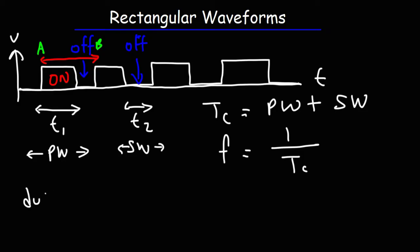And there's something called the duty cycle. The duty cycle tells you the percentage of each cycle in which the wave is in the on state. So in this case the duty cycle is the pulse width divided by the cycle time times 100 percent. So those are some formulas that are associated with rectangular waveforms if you're dealing with circuits and things like that.